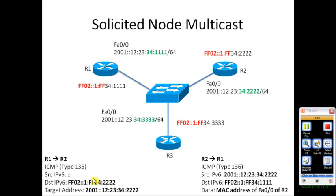R1 receives this Neighbor Advertisement in response to its Neighbor Solicitation and learns the MAC address of R2's FastEthernet 0/0. R1 can now deliver packets to R2 because all IPv6 packets will be encapsulated inside frames containing both the source MAC address of R1's FastEthernet 0/0 and the destination MAC address of R2's FastEthernet 0/0. I hope this information is useful — thank you for watching. This is Hakim Adesh, bye.